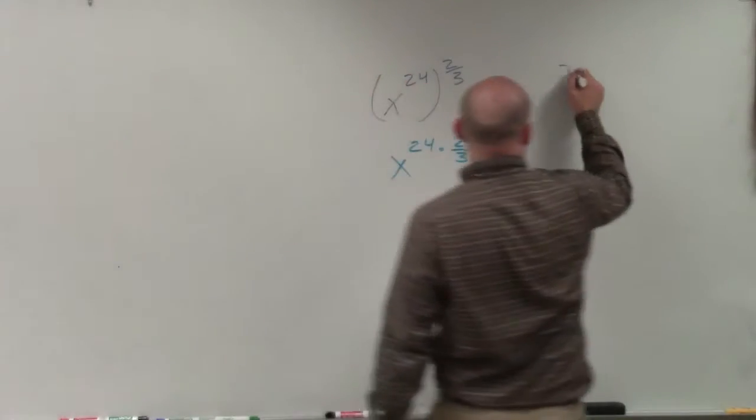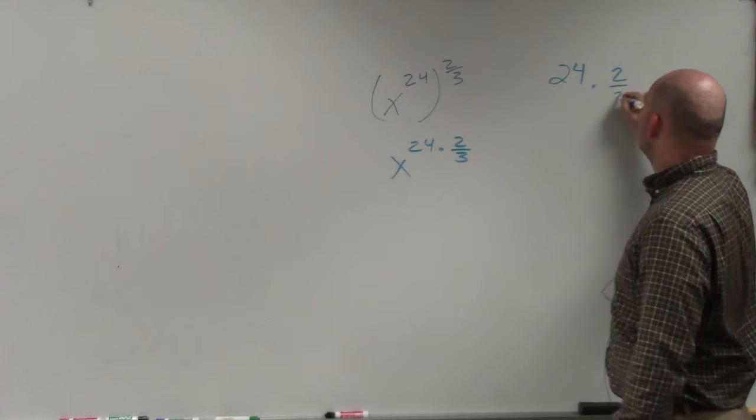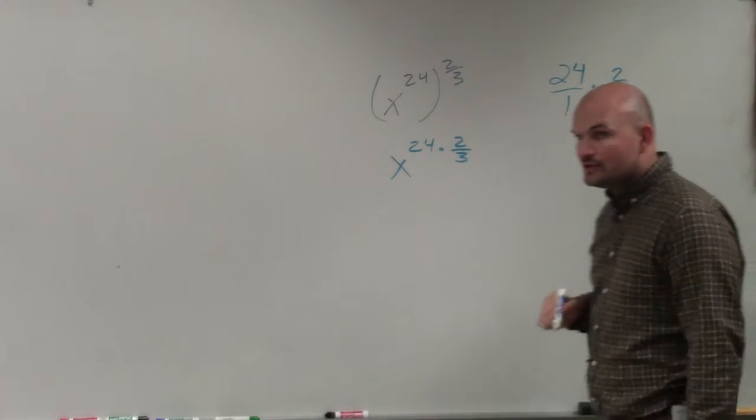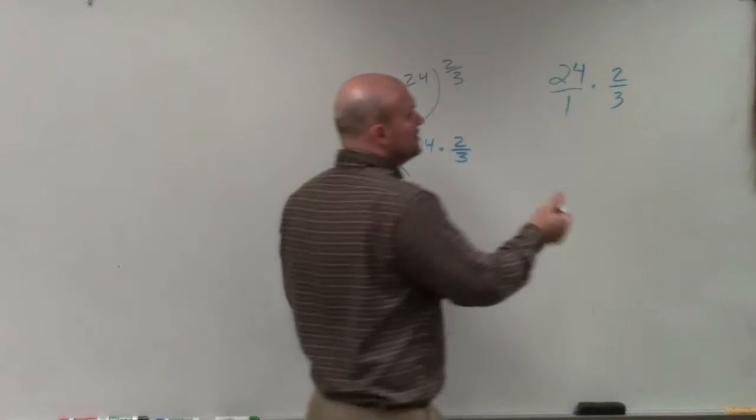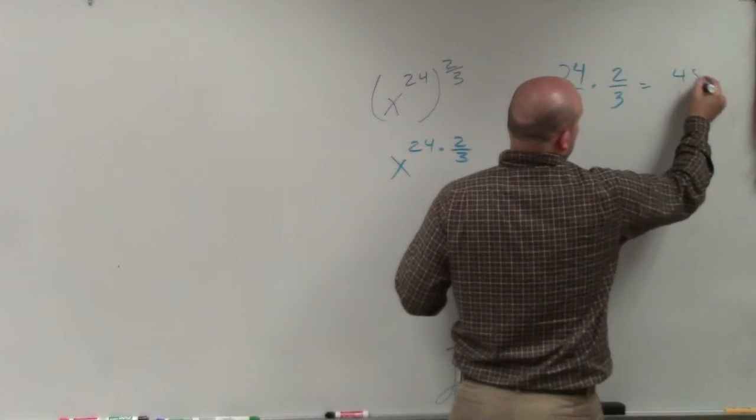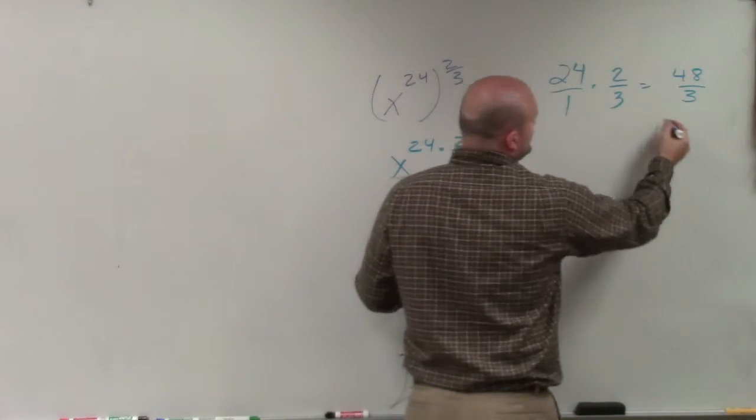Now to multiply a whole number times a fraction, you just rewrite your whole number as a fraction. And you can multiply across, if you like, 48 over 3, which is equal to 16.